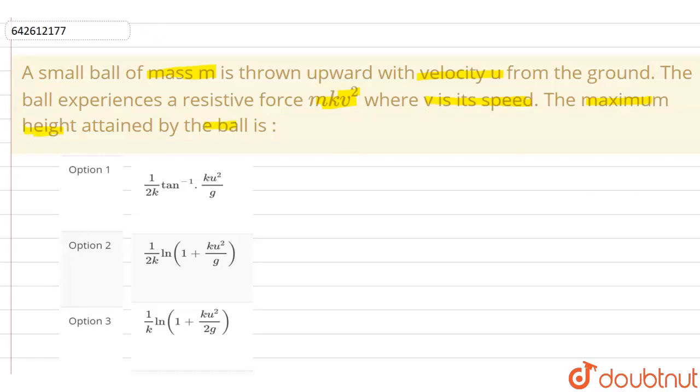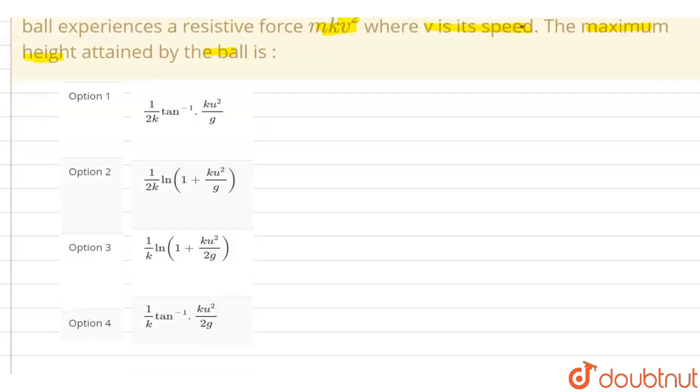Let's suppose here's our ground. A ball is thrown initially upwards with an initial speed of u. The ball here has an initial speed of u.